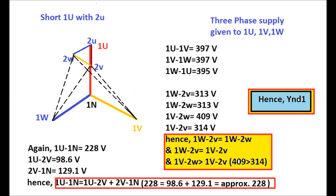A three-phase supply has been given to terminals 1U, 1V, and 1W. The measured phase-to-phase voltages are: 1U to 1V = 397V, 1V to 1W = 397V, and 1W to 1U = 395V. By means of the multimeter, the voltage between 1W and 2V is measured as 313V.